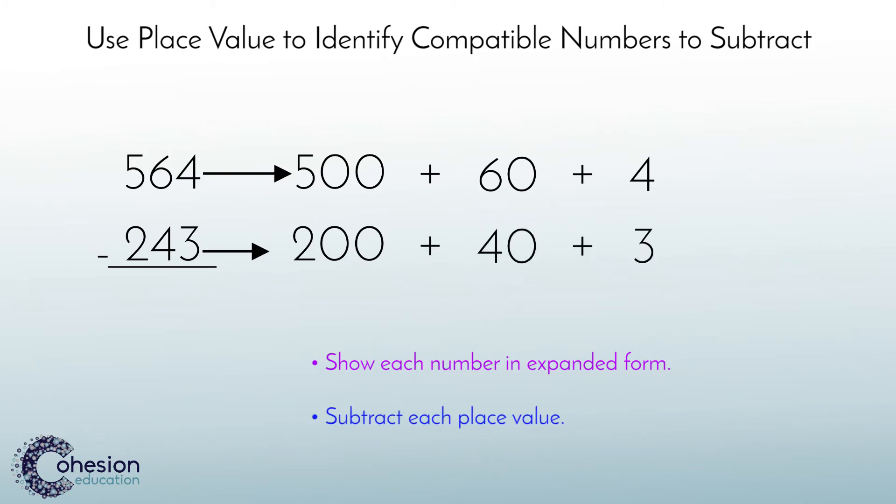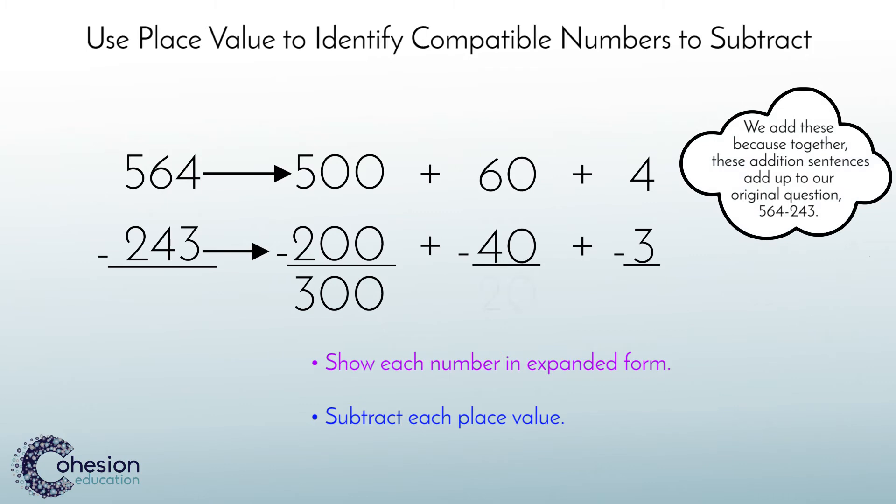Now we would subtract each place value. So 500 minus 200 equals 300, 60 minus 40 equals 20, and 4 minus 3 equals 1.